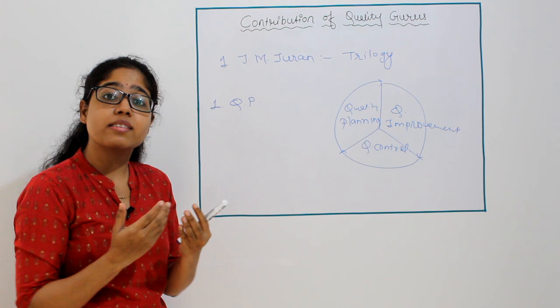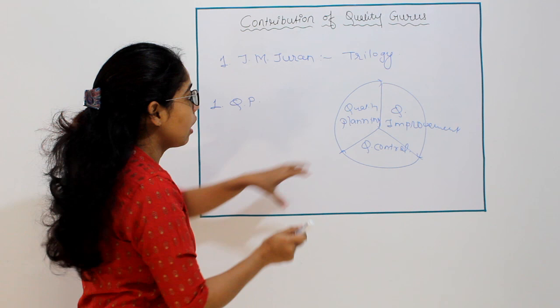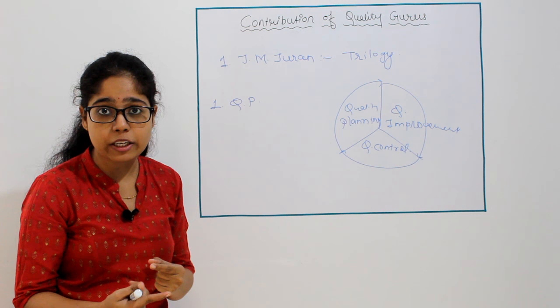Once the product is produced, the next step is to launch it into the market and receive quality feedback from customers. This is quality planning — you plan accordingly and launch the product into the market.